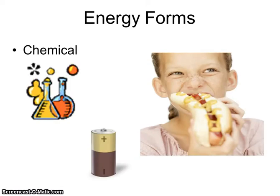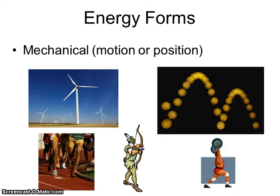Chemical energy would be like a battery, or you eating food — the breakdown of the food gives you energy. Then the last type of energy is mechanical energy. In this class, this is the type of energy we're going to look at — mechanical energy. It's the energy of motion or position. So the two forms of energy we're going to study in this unit are heat energy whenever there's friction involved, and mechanical energy.